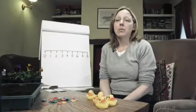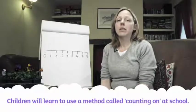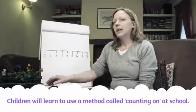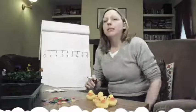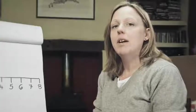As well as learning how to count backwards, children will be shown a way to subtract that's called counting on. Have a look at these numbers on a number line. If we want to find out what eight take away five is,